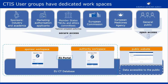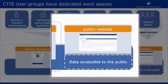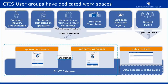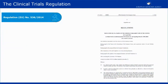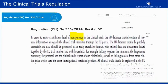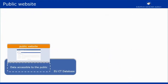In this video, we will describe the main functionalities of the public website. The clinical trials regulation aims at increasing transparency in the area of clinical trials. To accommodate that aim, EMA will set up a website making available to the public information that has been submitted on clinical trials through CTIS.